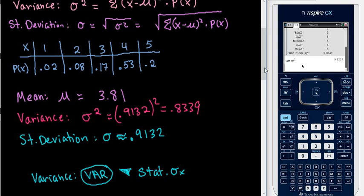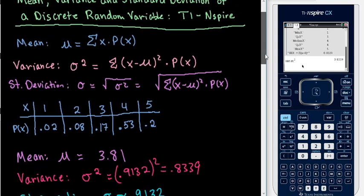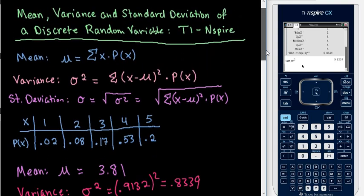So again, with this we were looking at finding the mean, the variance, and the standard deviation of a discrete random variable. This does have to be a discrete distribution. You would do something different if you have a continuous random variable. As always, thanks for watching.